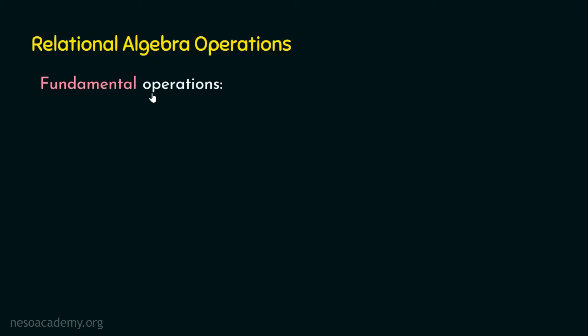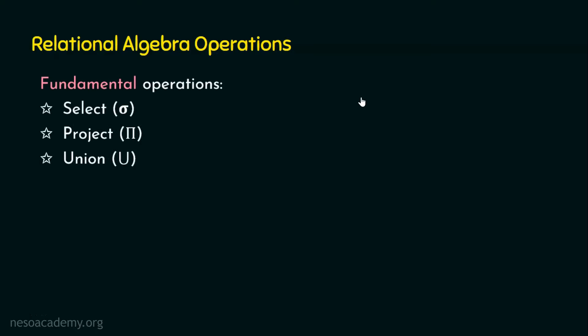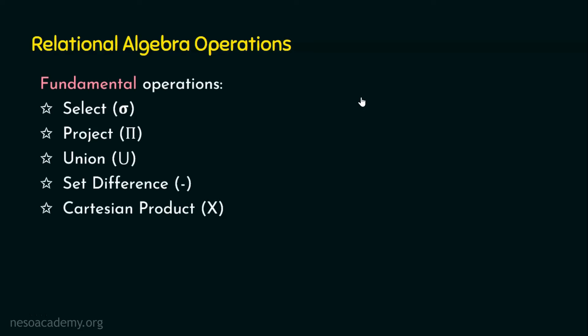Talking about the fundamental operations, there are six fundamental operations in relational algebra. The first operation is Select. The second is Project. The third is Union. The fourth is Set Difference. The fifth is Cartesian Product. And the sixth fundamental operation is Rename. These six operations are the fundamental operations in relational algebra.